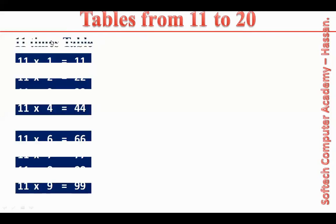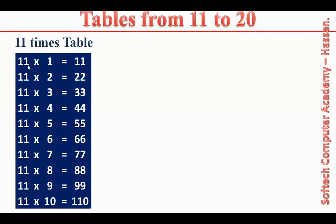11 times table. 11 ones are 11. 11 twos are 22. 11 threes are 33. 11 fours are 44. 11 fives are 55. 11 sixes are 66. 11 sevens are 77. 11 eights are 88. 11 nines are 99. 11 tens are 110.